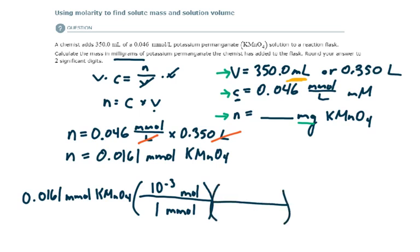And then, now that I have moles, I can use the molar mass to convert that to grams. So one mole of potassium permanganate has a molar mass of 158.034 grams.